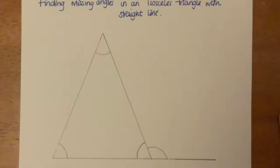Hi everyone, this video is about finding missing angles in an isosceles triangle with a straight line.